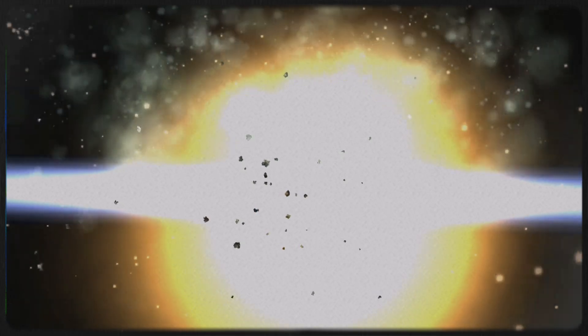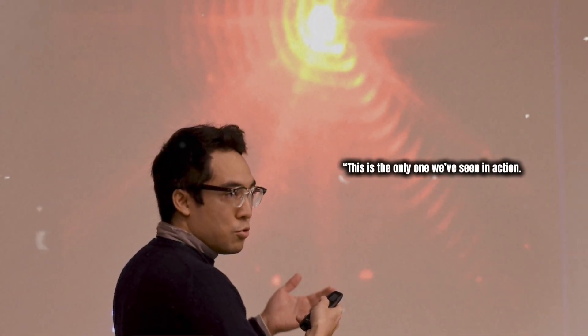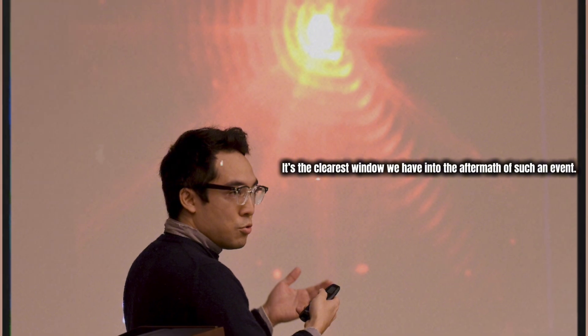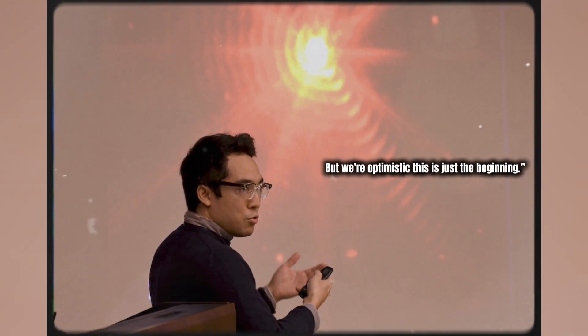These new clues are helping scientists reconstruct what happens when a planet is swallowed by its star. The ability to chemically map and characterize the leftover gas offers something truly rare, direct evidence of what takes place after the chaos has settled. Dr. Lau, another researcher on the team, put it plainly, This is the only one we've seen in action. It's the clearest window we have into the aftermath of such an event. But we're optimistic this is just the beginning.